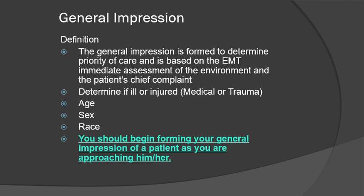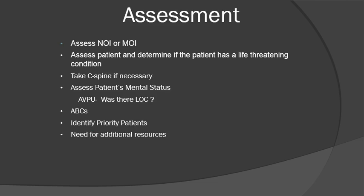You're going to want to determine some very basic information, including the patient's age, sex, and other factors. You should begin forming your general impression of the patient as you are approaching him or her. You're going to assess the nature of the illness (NOI) or the mechanism of injury (MOI). You want to assess the patient and determine if they have a life-threatening condition — this is just a very cursory overview of the situation.